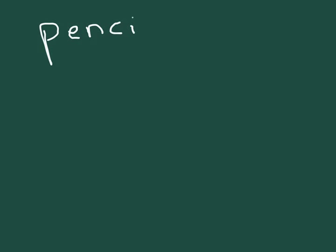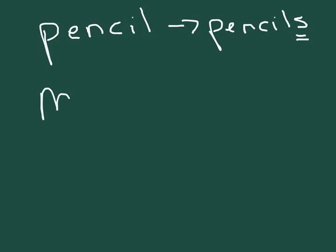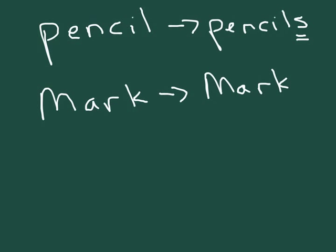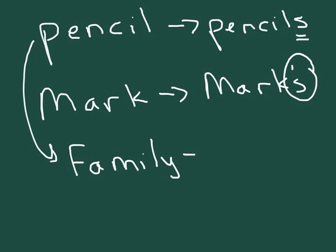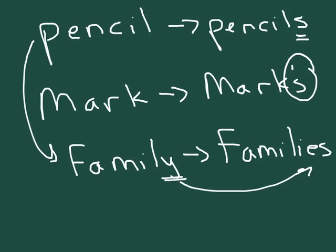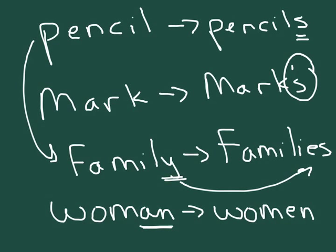We do have some inflection in English, so endings are not so strange for us. Making something plural is a simple example: 'pencil' in the singular goes to 'pencils' in the plural — that -s ending is sort of like inflection. Same thing with possession: if you had the name Mark and wanted to make it possessive, you'd add an apostrophe -s. That's also a holdover of inflection. And there are other rules — 'family' in the plural goes to 'families' (I-E-S), so Y-nouns follow that pattern.